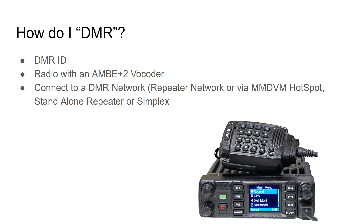You're also going to need a radio with an AMBE-2 vocoder. People ask if they can use a Baofeng with a hotspot — the answer is no. You need the vocoder in your radio, and then your DMR hotspot forwards that digitized signal. The last thing you need is to be able to connect to a DMR network or a standalone DMR repeater. Repeaters are often networked, which makes them very convenient to use with hotspots — so you'll need either a DMR-capable repeater or a hotspot, referred to as an MMDVM, a multimedia digital voice modem.